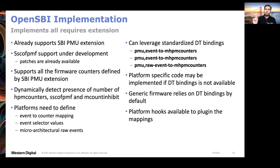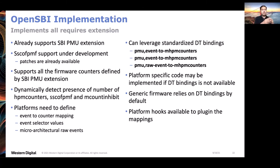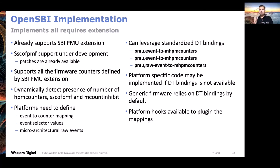The platform needs to provide a mapping defining which counters are used to monitor which events, and what the event selectors are for both generic events and raw events. Since the ISA doesn't define raw events, the SBI PMU specification does. Platforms can provide this mapping through DT bindings or implement their own code using the hooks already available in the generic SBI code.